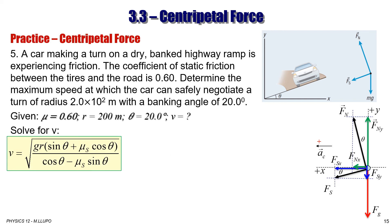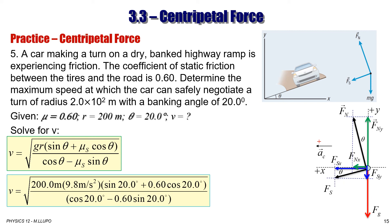Plugging in: v = √[9.8 × 200 × (sin 20° + 0.6 cos 20°) / (cos 20° − 0.6 sin 20°)]. Evaluating this in the calculator gives v = 49 m/s. This is the maximum speed at which the car — with those tire conditions giving a coefficient of friction of 0.6 — can safely negotiate that curve.